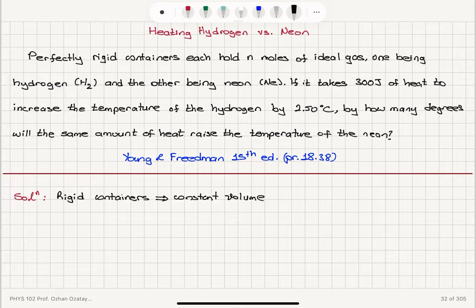Alright, let's start with hydrogen. Hydrogen is H2, it's diatomic. So if we write the total internal energy of the hydrogen gas, it's going to have contributions from translations of the center of mass and rotations.